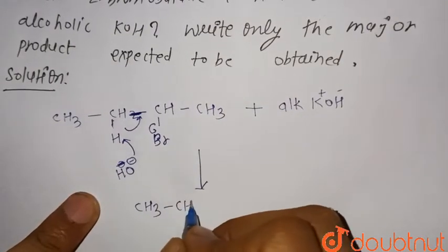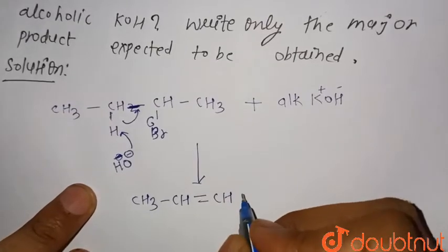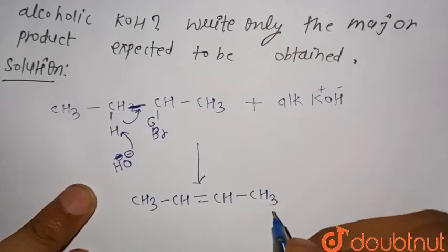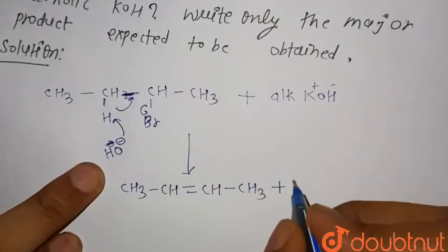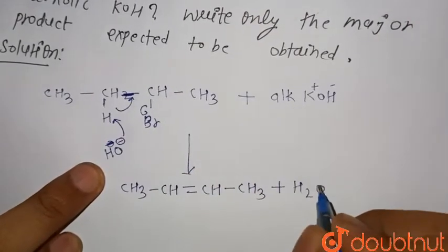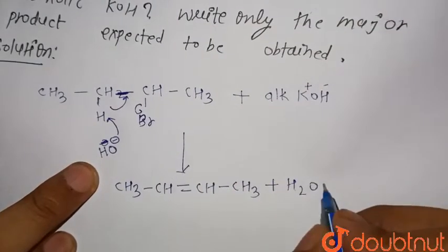The product is CH2=CH-CH3, plus water is also formed (OH- takes H), and KBr (Br- combines with K+).